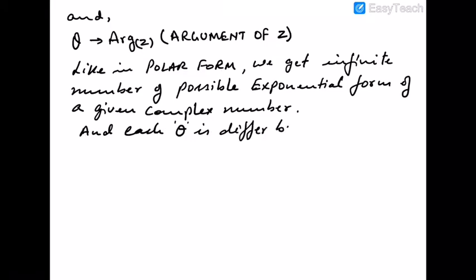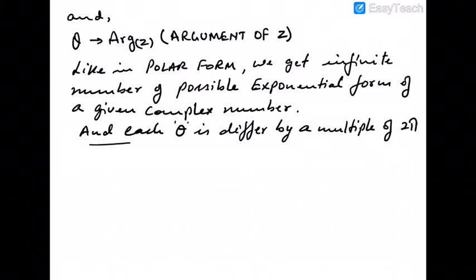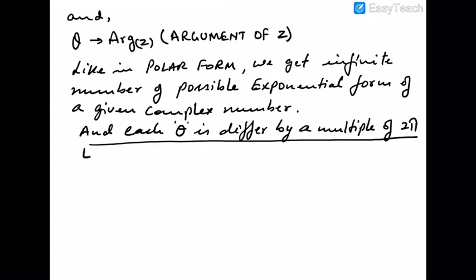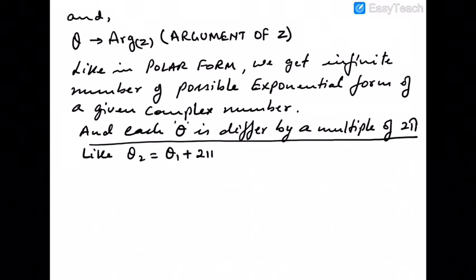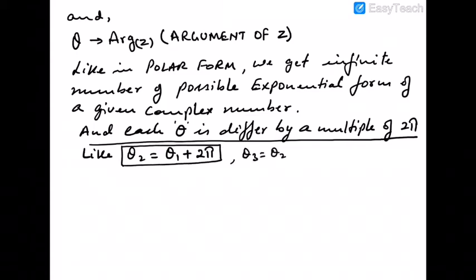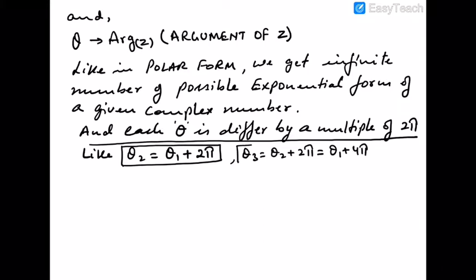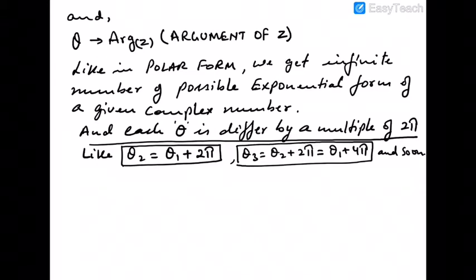Just like in polar form, we get an infinite number of possible exponential forms for a given complex number. Each θ differs by a multiple of 2π — so θ₂ = θ₁ + 2π, θ₃ = θ₁ + 4π, and so on. All these values of θ give us the same complex number.